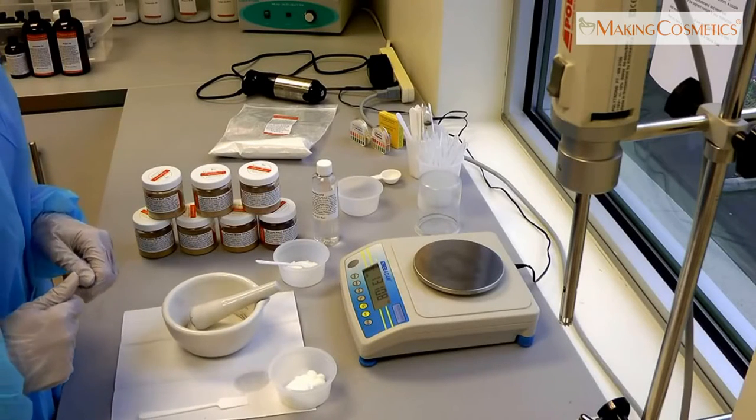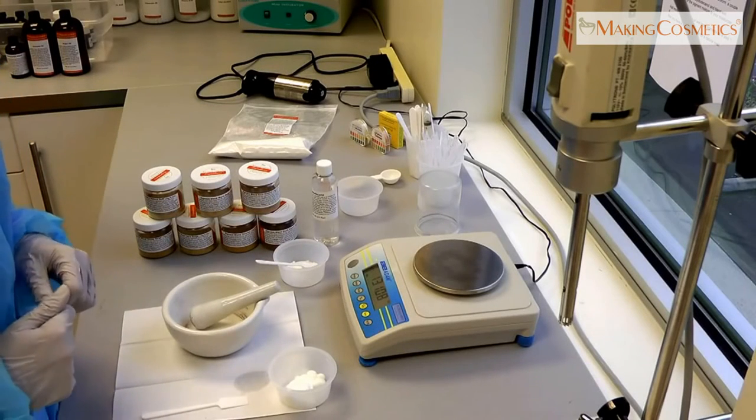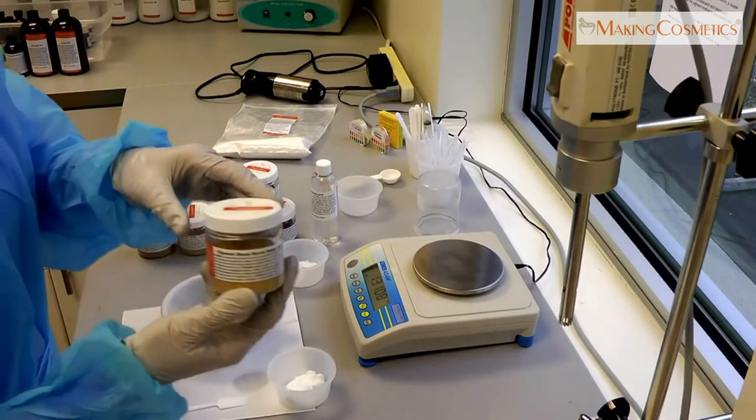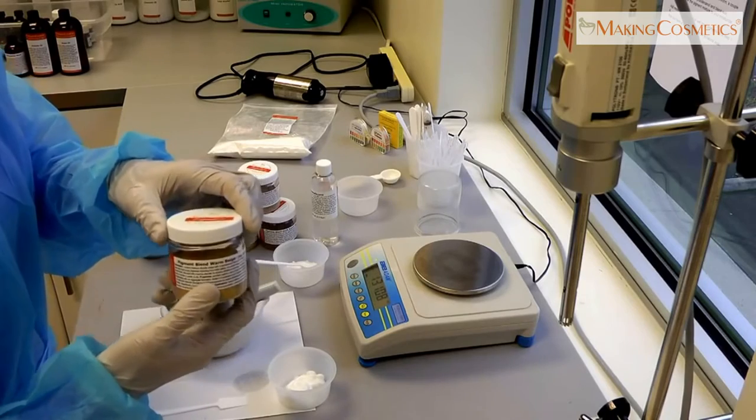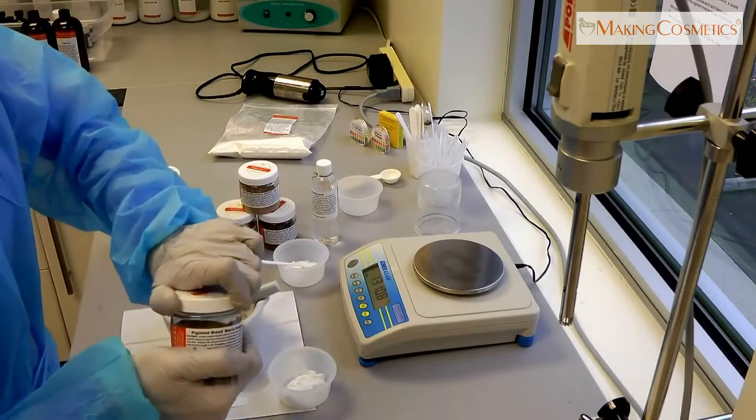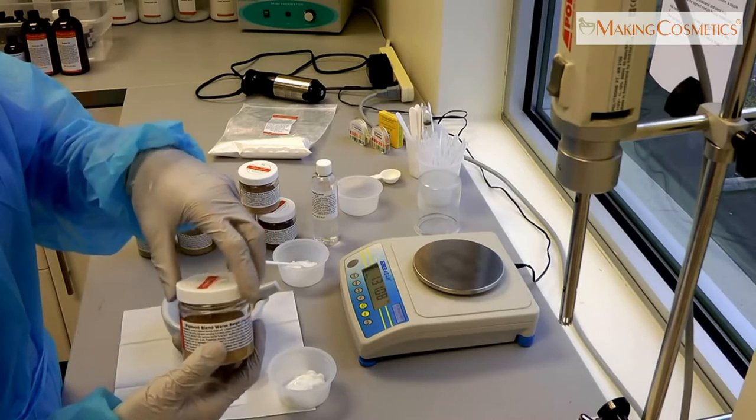In this clip we're going to show you how to wet pigments. Pigments such as iron oxides are the main colorants in powder makeup and foundation. If you want to turn your ordinary moisturizer into a tinted moisturizer, you need to pre-disperse these pigments.